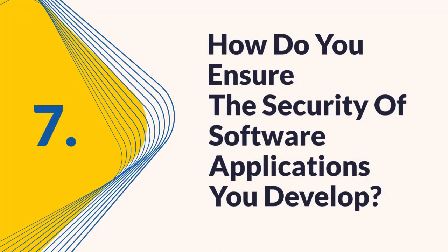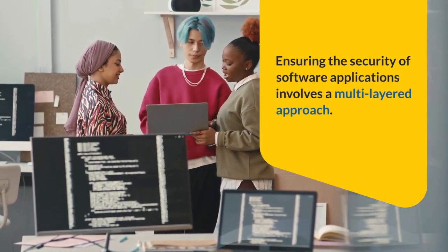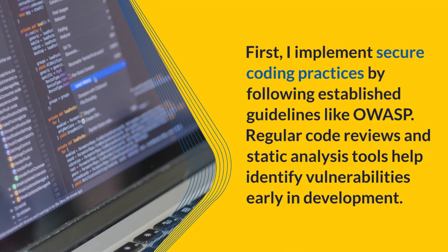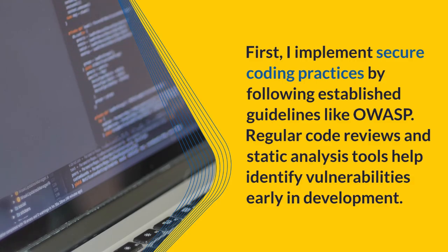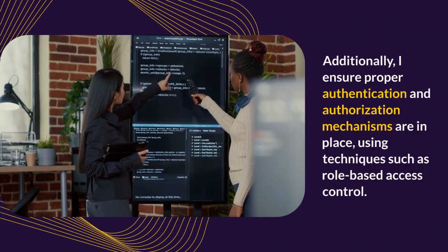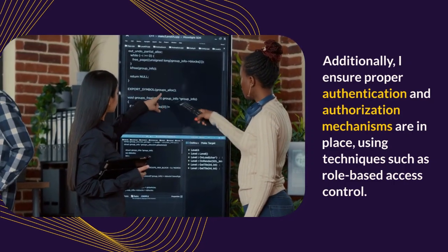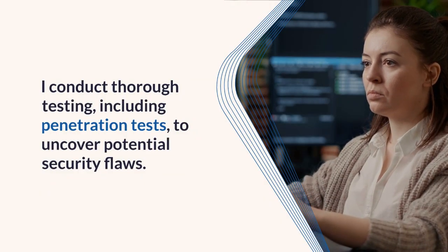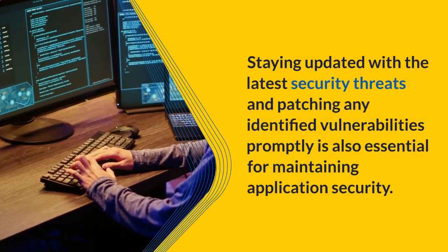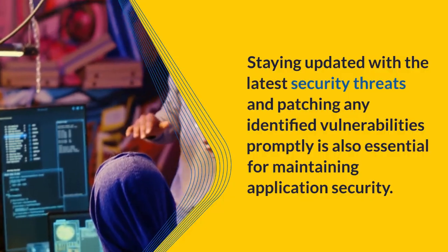Question 7: How do you ensure the security of software applications you develop? Ensuring software security involves a multi-layered approach. I implement secure coding practices by following established guidelines like OWASP. Regular code reviews and static analysis tools help identify vulnerabilities early in development. I ensure proper authentication and authorization mechanisms are in place, using techniques such as role-based access control. I conduct thorough testing including penetration tests to uncover potential security flaws, and I stay updated with the latest security threats, patching identified vulnerabilities promptly.